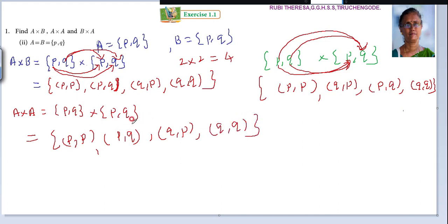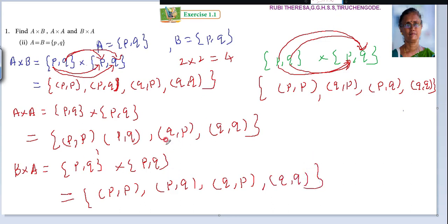Next is B cross A. What is B? {P, Q}. Cross A, which is {P, Q}. This is also the same thing. Observe all three computations—they give the same answer. No need to pair again because A equals B. The result is {(P, P), (P, Q), (Q, P), (Q, Q)}. Do you follow? Thank you.